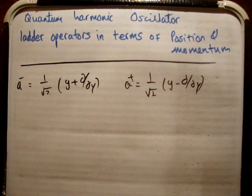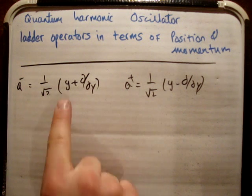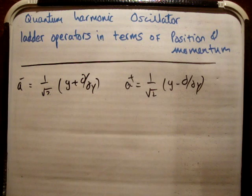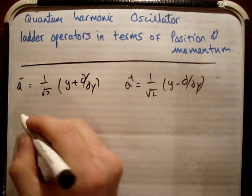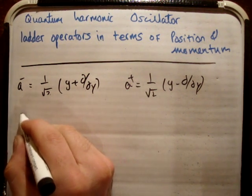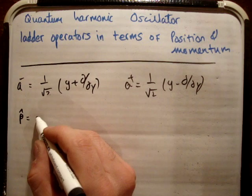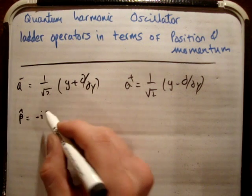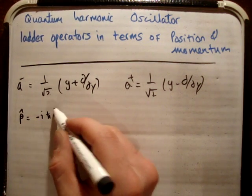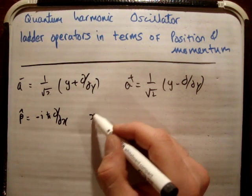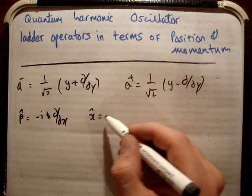The question is how do we get our position and momentum back into this. The momentum operator is equal to −iℏ ∂/∂x, and the position operator is just itself, x̂.